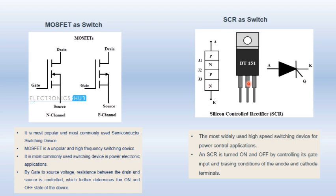Next, we have SCR as a switch — the most widely used high-speed switching device for power control applications. The SCR is turned ON or OFF by controlling its gate input and the biasing condition of the anode and cathode terminals. If you apply a gate signal, it will become ON, and if you don't apply a gate signal, it will remain OFF. In this way, the SCR also works as a switch.